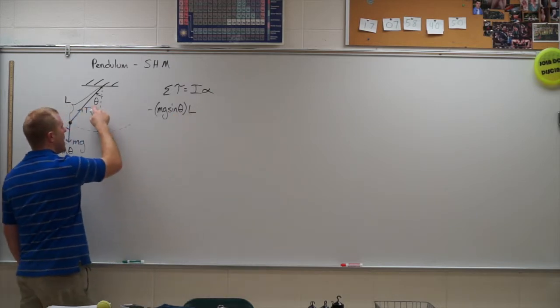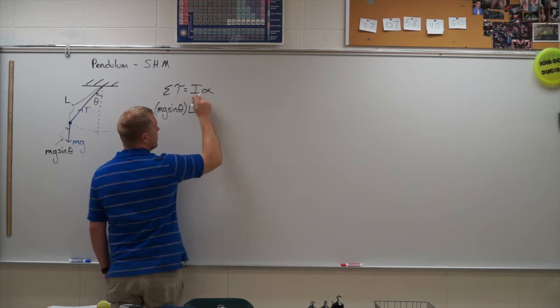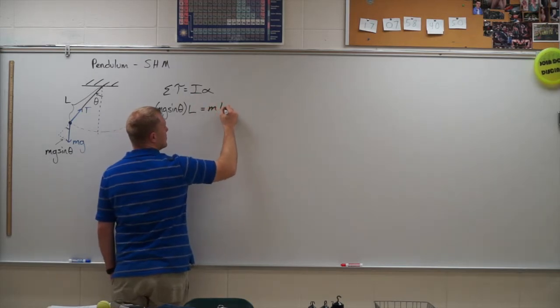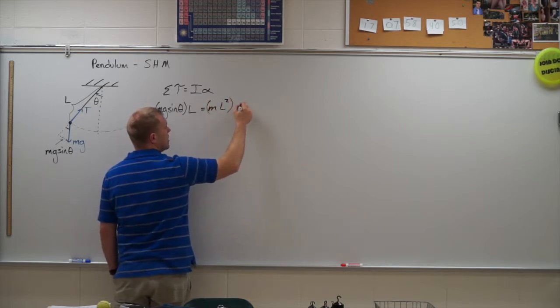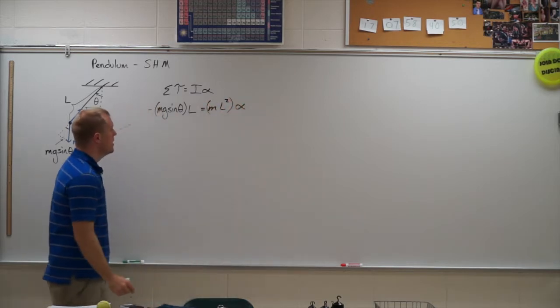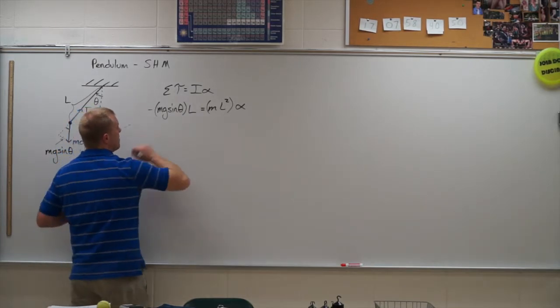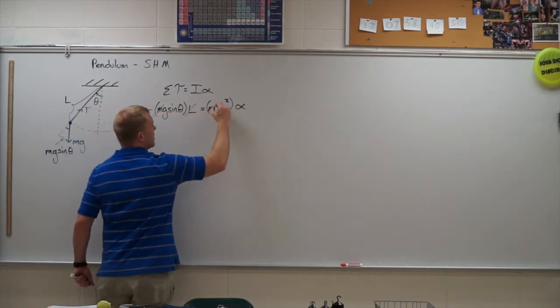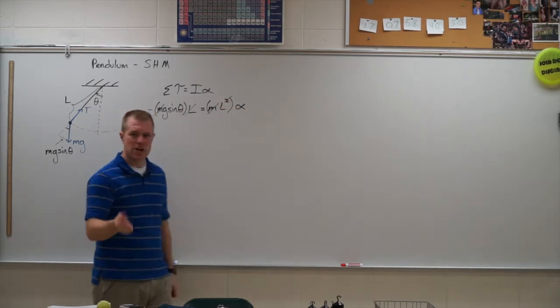I'm going to say this is a positive angle, so this is a negative torque equals M times L squared, because that's how far away it is from its axis rotation for point mass. That is the moment of inertia times alpha. Now I can cancel some stuff out here. So we see I have an M on both sides and cancel out an L as well. And we get to this point here.